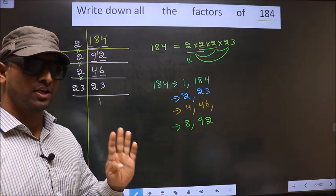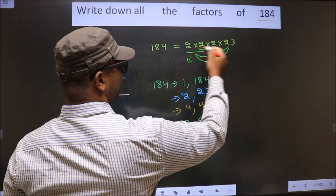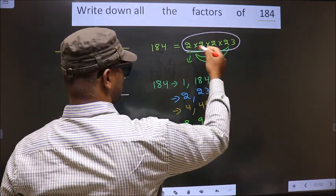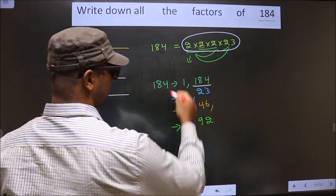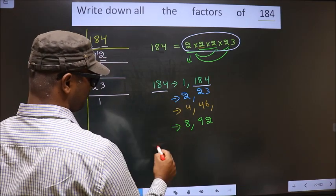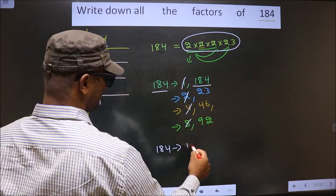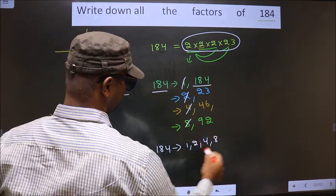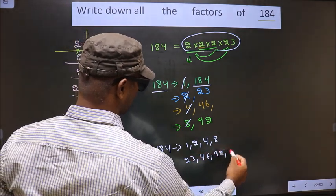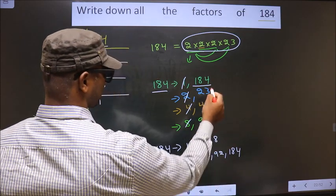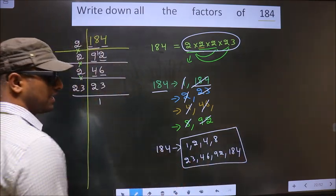Now we take a combination of all 4 numbers. We have exactly 4 prime factors, so taking all 4 gives 184 itself. Thus, all the factors of 184 are: 1, 2, 4, 8, 23, 46, 92, and 184. These are all the factors of 184.